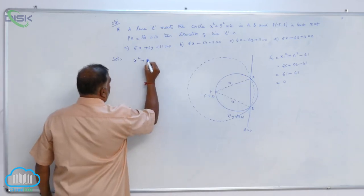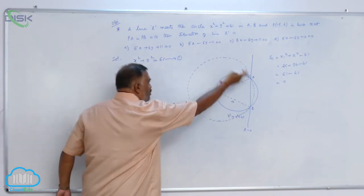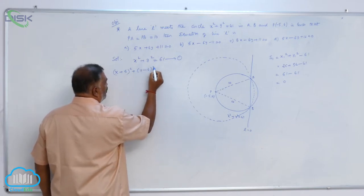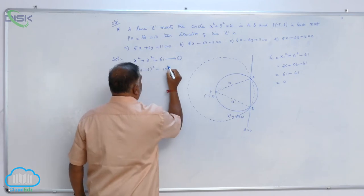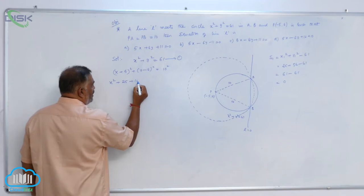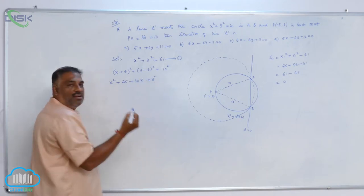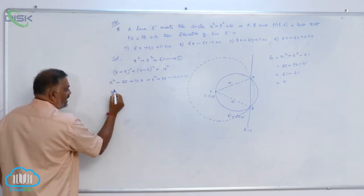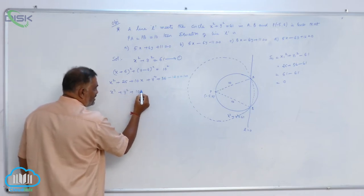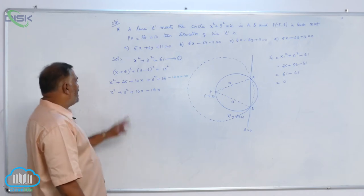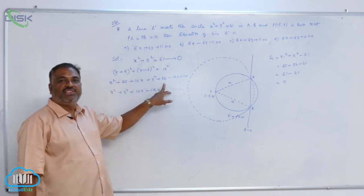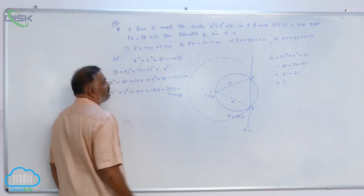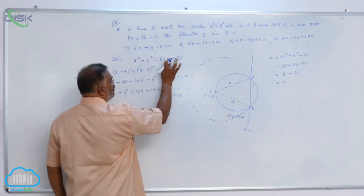Circle equation x square plus y square equal to 61 is first one. The new dotted circle is x plus 5 whole square plus y minus 6 whole square is equal to 10 square. Now expand. X square plus 25 plus 10x plus y square plus 36 minus 12y is equal to 100. Now simplify. X square plus y square plus 10x minus 12y. You can see 25 and 36 makes 61. So 61 minus 100 minus 39 equal to 0. Equation 2. Even if you want, you can write it as is equal to 0. No problem.